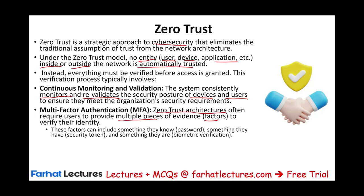These factors can include something that they know — a password — but with zero trust, something that they have in addition to the password, such as a security token, or something that they are, like a fingerprint, biometric verification, or facial recognition. Combining all of those is what we call multi-factor authentication. They're not using only one thing — it's your password and some sort of security token sent to your email or sent to your phone.